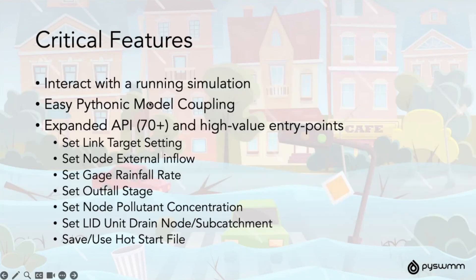Some of the critical features: as I explained, you can interact with the running simulation — it's very easy Pythonic model coupling. The expanded API has high-value entry points: set link target setting, set external inflow, set rain gauge rainfall rate, and you can set the outfall stage. These first four are very, very helpful in doing data assimilation.